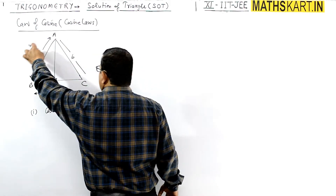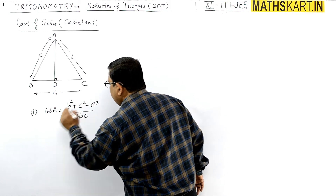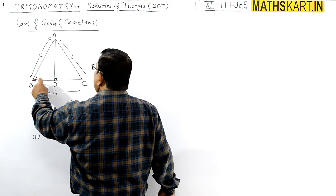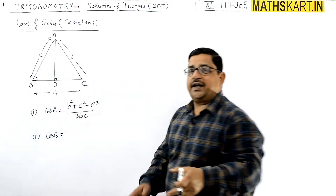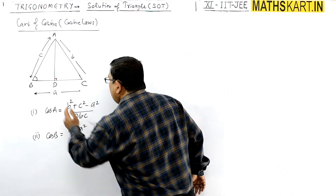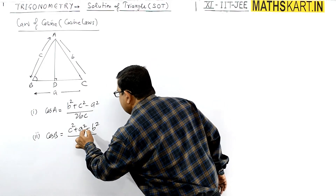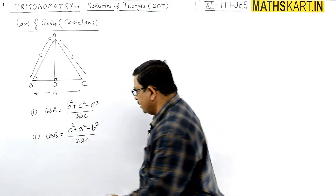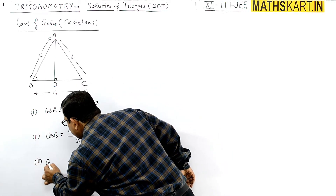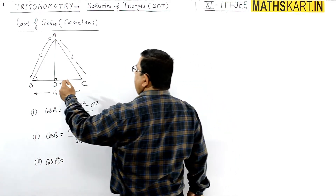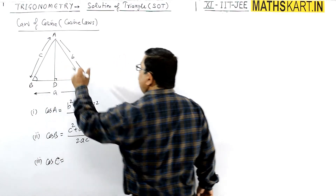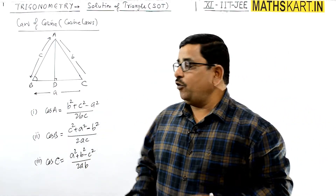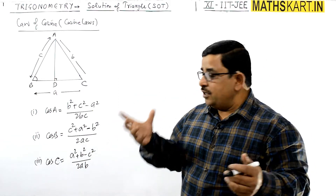These formulas are easy to remember. Cos B: the adjacent sides squared are c² + a², minus the opposite side squared, divided by 2ac. Cos C equals a² + b² − c² upon 2ab. These are the three cosine law formulas. We will prove one and you can prove the other two similarly.